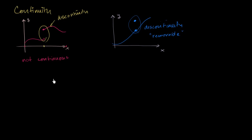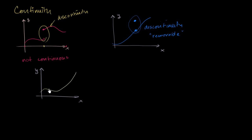One could make a reasonable argument that this also looks like a jump, but this is typically categorized as a removable discontinuity. Because if you just redefine the function so it wasn't up here but was right over here, then the function is continuous — so you can kind of remove the discontinuity. And finally, if I were to draw another function and ask you, is this one continuous over the interval depicted? You'd say, well, it looks all connected all the way. There aren't any jumps, no removable discontinuities. This one looks continuous, and you would be right.